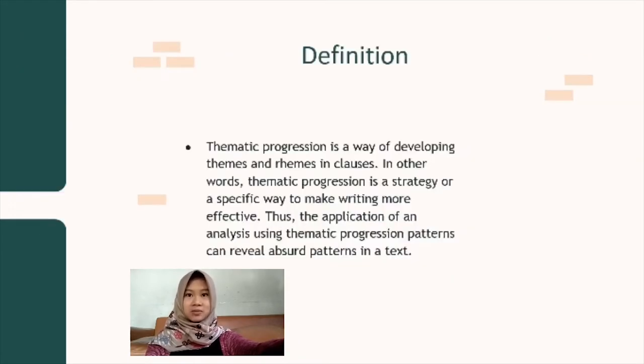Thematic progression is a way of developing themes and rhemes in clauses. In other words, thematic progression is a strategy or a specific way to make writing more effective. Thus, the application of an analysis using thematic progression patterns can reveal absurd patterns in a text. It means when we find an absurd pattern in our text, we can analyze it with thematic progression.